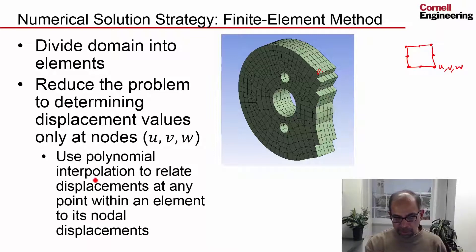Use polynomial interpolation to relate displacements at any point within an element to its nodal displacements. So if I want to know u at some location on that face, it will involve interpolation of the u's over here. In this case I have one, two, three, four, five, six, seven, eight. I'll have eight values to interpolate.